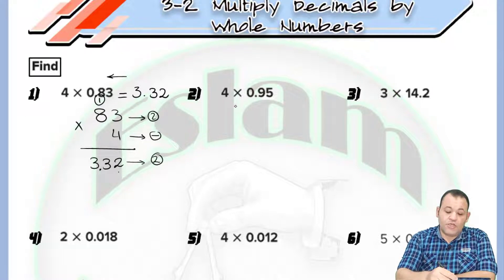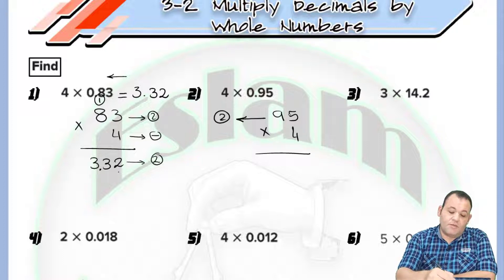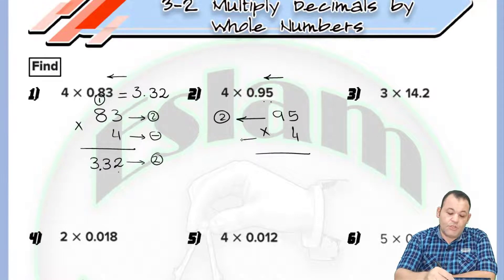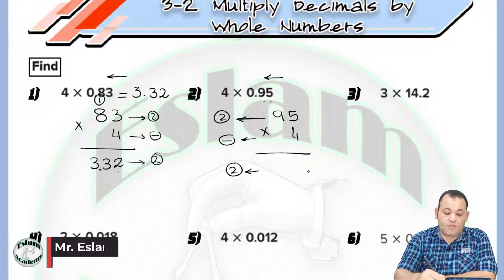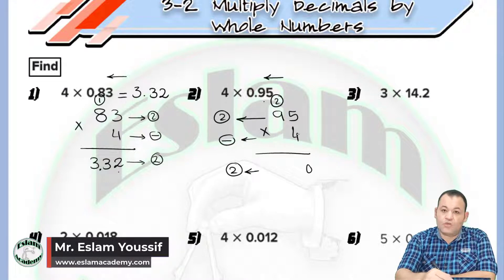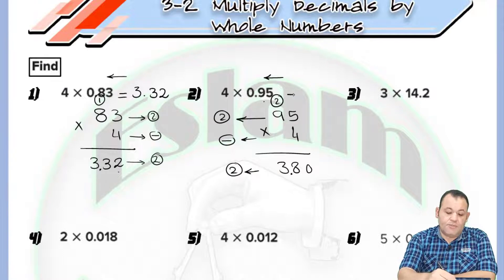For question number two, we have 4 times 0.95. First, write 95 times 4. The first number has a decimal point after two places — counting from the right: 1, 2. There is no decimal point in the second number. Now, 4 times 5 equals 20 — write 0 and carry 2. 4 times 9 equals 36, plus 2 equals 38. Counting two places from the right, the product equals 3.80.